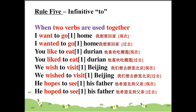When two words are used together, use 'to' between them. For example: want and go — I want to go home, I wanted to go home. Like and eat — you like to eat durian. The second verb must always be in its base form.